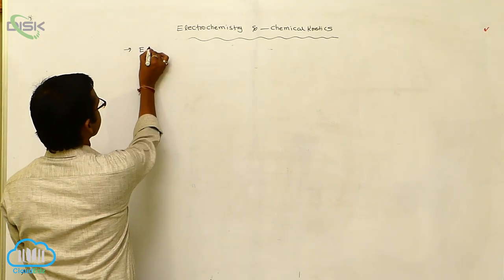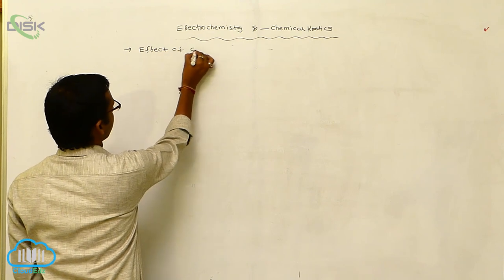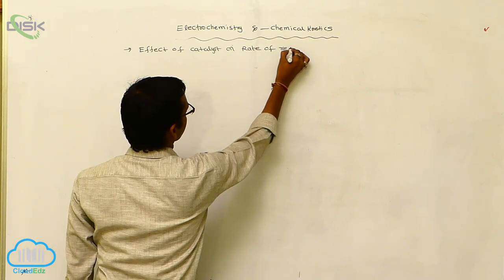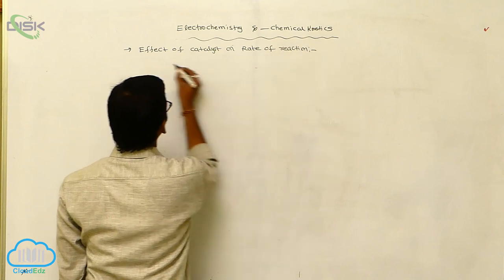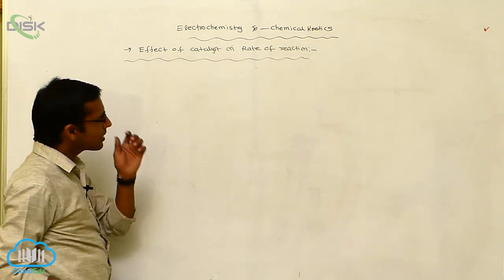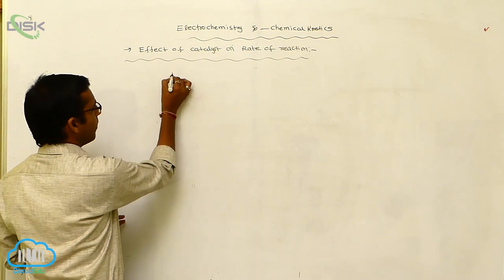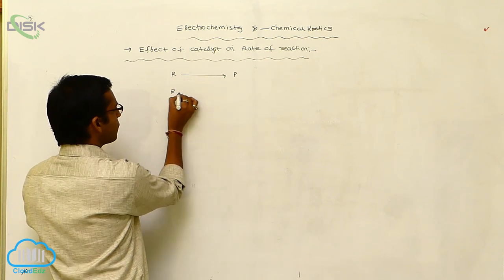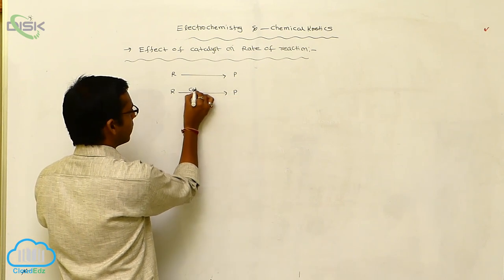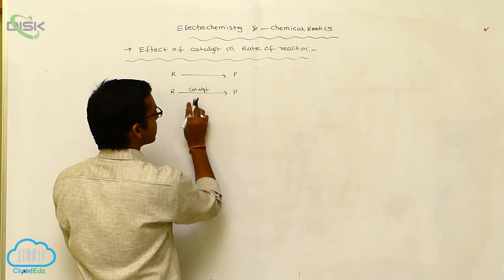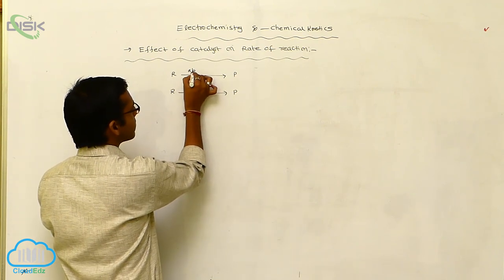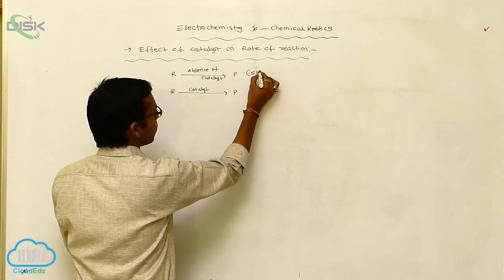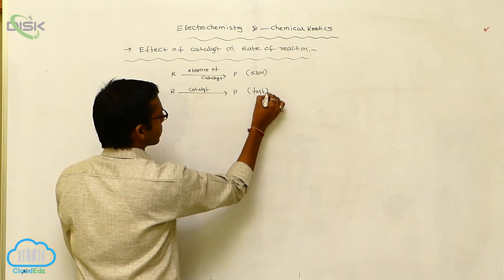Effect of catalyst on rate of reaction: the catalyst increases the rate of reaction, meaning the reactant is converted to product more quickly. In presence of catalyst the rate of reaction is fast; in absence of catalyst the rate of reaction is slow.